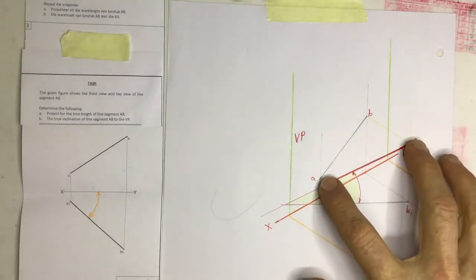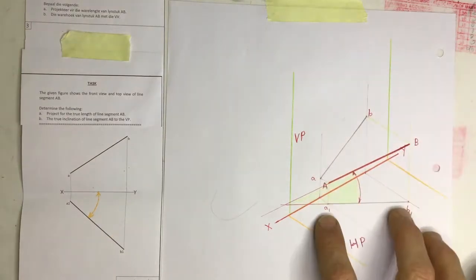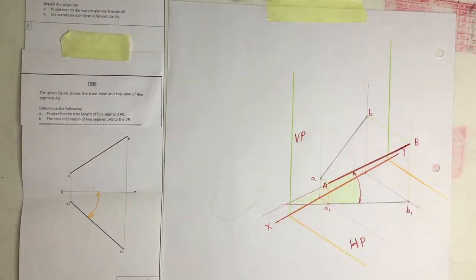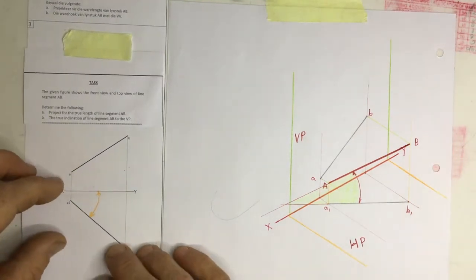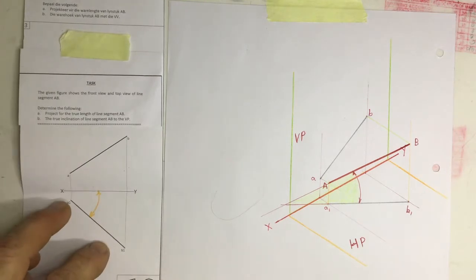...showing the true length of the line being projected across onto the vertical plane and projected down onto the horizontal plane. What we've got here is our question. And they have given us those two line segments drawn as a first angle orthographic projection.